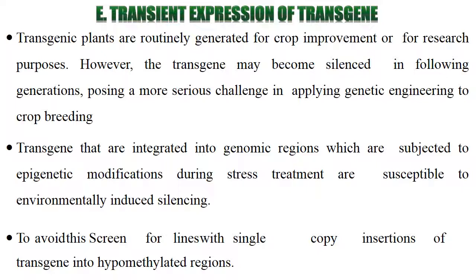Transient expression of transgenes: Transgenic plants are routinely generated for crop improvement or research purposes. However, transgenes may become silenced in subsequent generations, posing a serious challenge in applying genetic engineering to crop breeding. Transgenes integrated into genomic regions subjected to epigenetic modifications during stress treatment are susceptible to environmentally induced silencing. To avoid this, one should screen for lines with single-copy insertion of transgenes into hypomethylated regions.